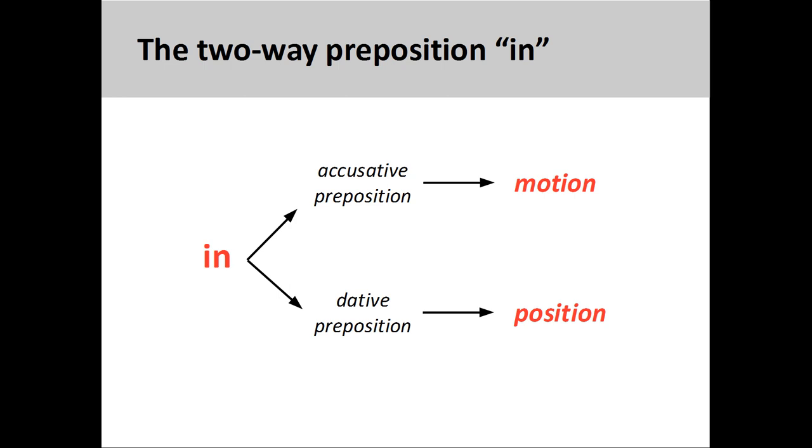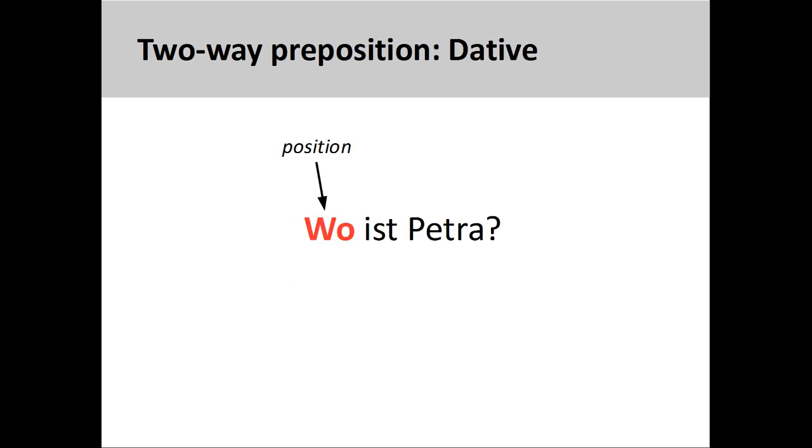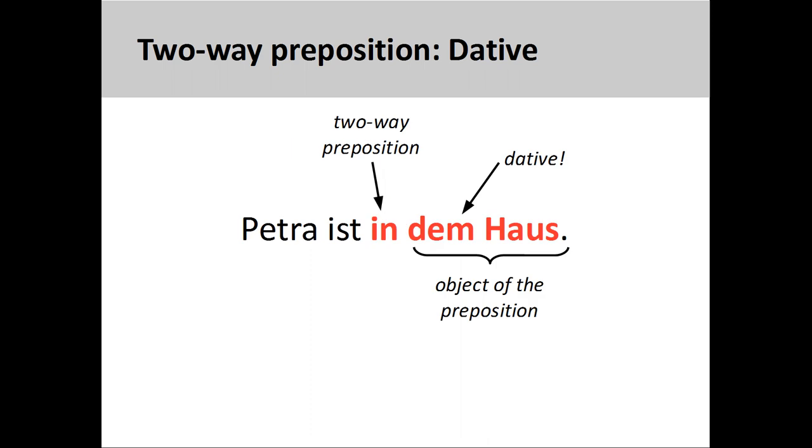We'll go over the full list of these prepositions in a later presentation. So, if I were to ask the question, wo is Petra? Where is Petra? Which is a question about her position. I would need to use in with a dative object. Petra is in dem Haus. Petra is in the house.